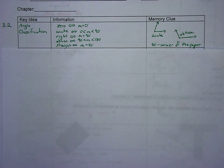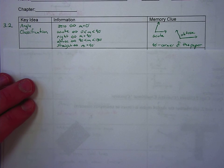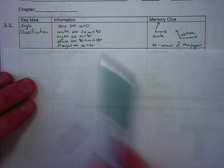Okay, so we're going to do the vocab for Chapter 3, Section 2, dealing with angles. Five different ways to classify angles. So angle classification, key idea.